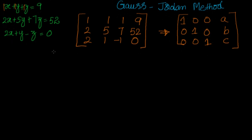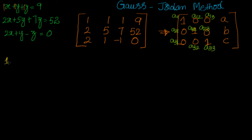There are a few steps to follow. The matrix elements are named a11, a12, a13, a21, a23, a32, a33, and so on. The first step is: make a11 equal to 1. Whenever I say 'make', I mean apply row transformations to achieve that value.